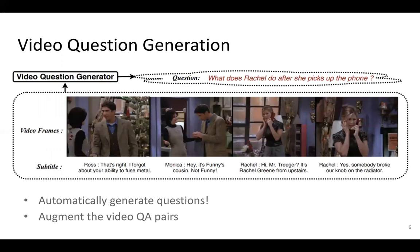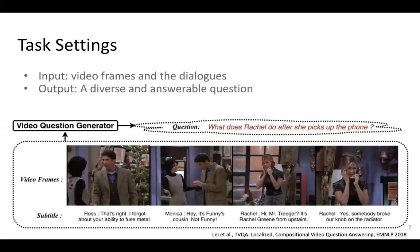Our motivation is: why not augment the Video QA dataset by automatically generating more diverse Video QA pairs with existing unlabeled videos, which are very cheap to access through the internet? Therefore, in this work, we took a first step to solve the problem. We propose a very practical task, Video Question Generation. In this task, our model takes video frames and dialogues as input, and the ideal generated questions should be diverse and answerable. Using an example from the TV QA dataset with a Friends series clip, one ideal generated question is: what does Rachel do after she picks up the film?